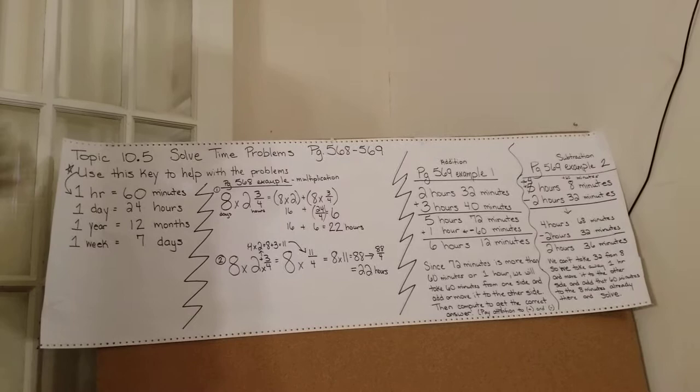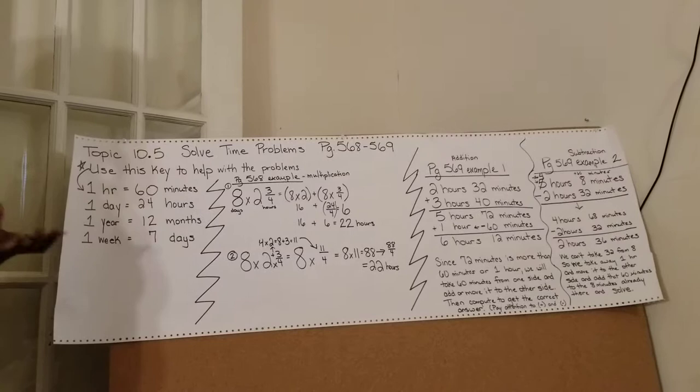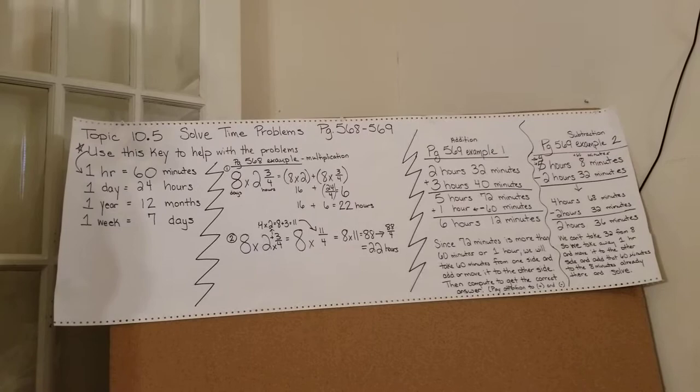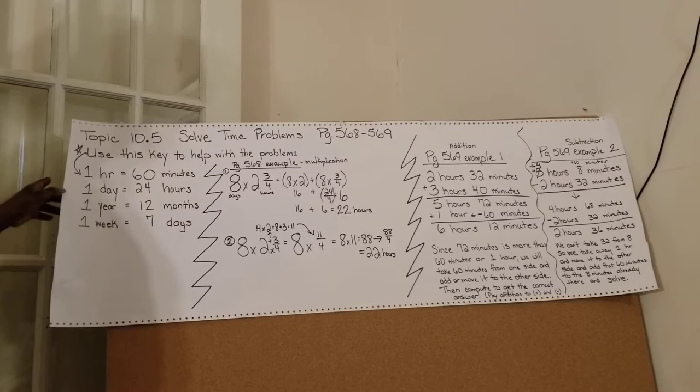Now, today we're going to be using this simple key that I have here to the left. One hour equals 60 minutes, one day equals 24 hours, one year equals 12 months, and one week equals 7 days.